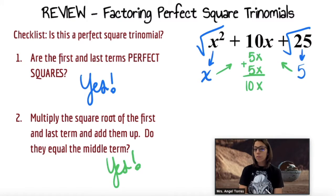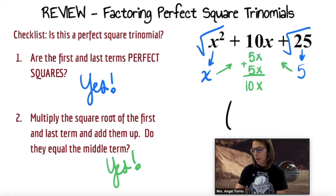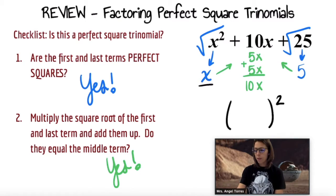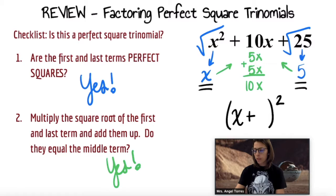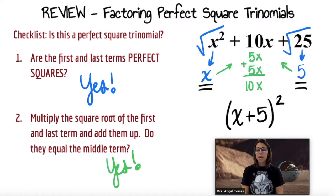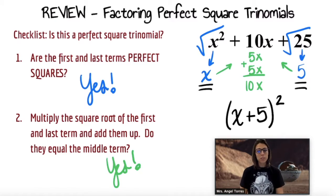From here, the factoring is very easy. Set up a binomial square, and then you're going to grab the square root of the first term and the square root of the last term: x plus 5. And now we've taken a trinomial and put it into a perfect square binomial.